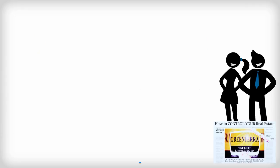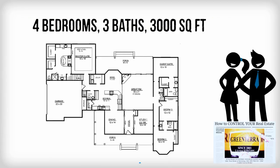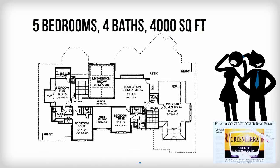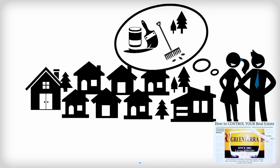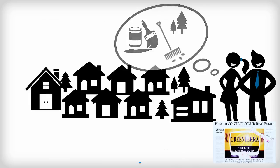For example, if neighbors are all four bedrooms, three baths, and three thousand square feet, additions that make your home five bedrooms, four baths, and four thousand square feet will make yours harder to sell. Improvements should make it show well and fit well in the neighborhood.